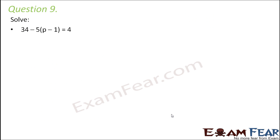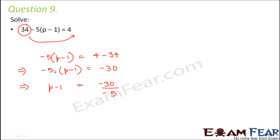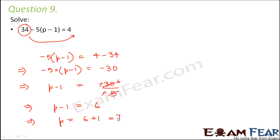Question number 9: 34 minus 5 into (p minus 1) is equal to 4. First, shift the constant 34: minus 5 into (p minus 1) equals 4 minus 34, which is minus 30. Shifting minus 5, we get p minus 1 equals minus 30 divided by minus 5. Since minus divided by minus gives plus, that's 6. So p minus 1 equals 6, therefore p equals 7 is the solution.